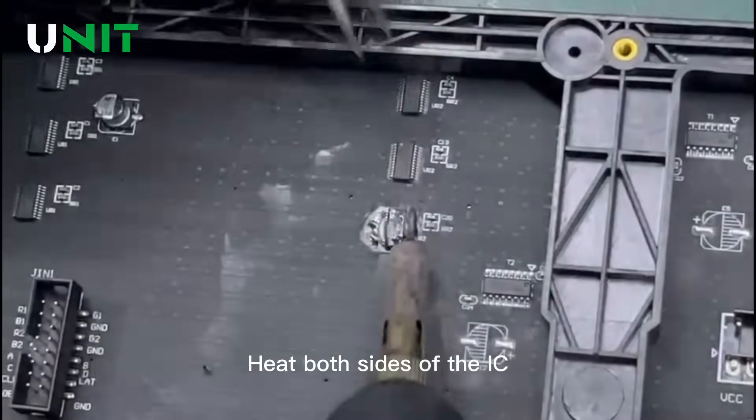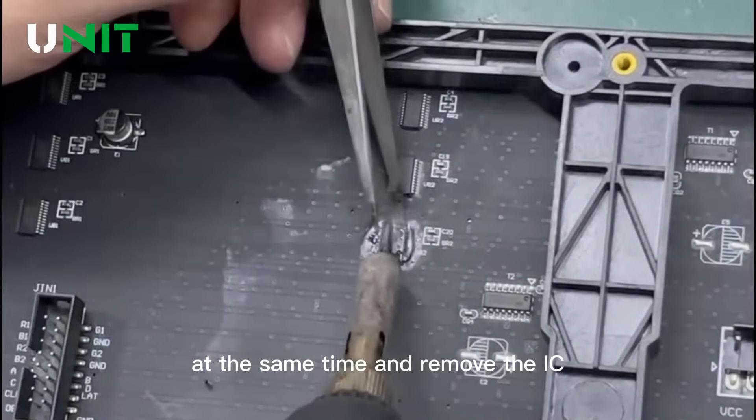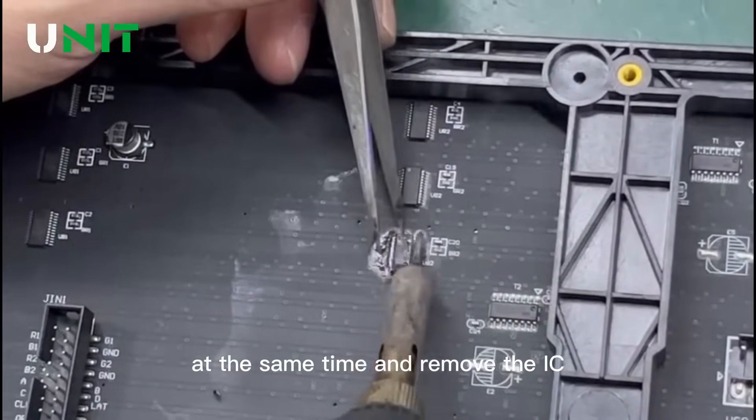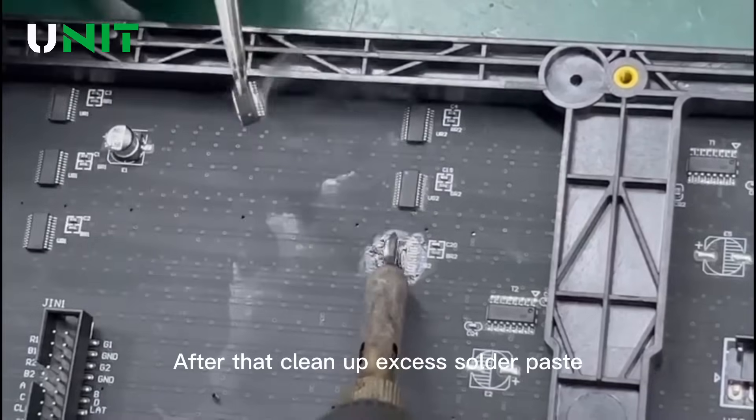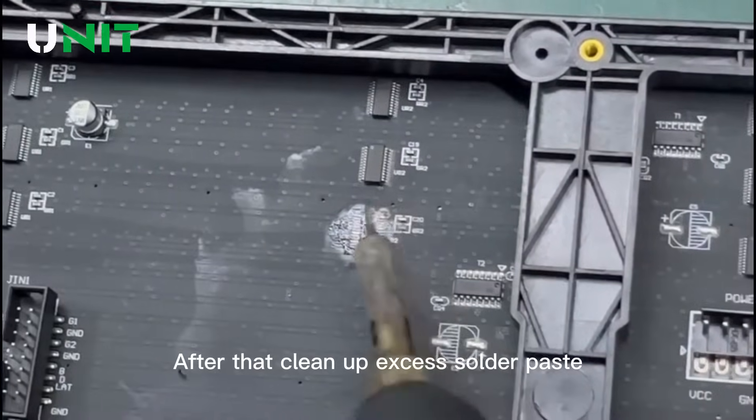Heat both sides of the IC at the same time and remove the IC. After that, clean up excess solder paste.